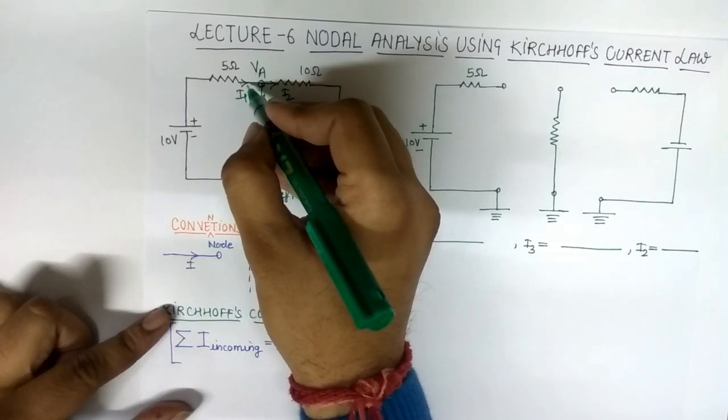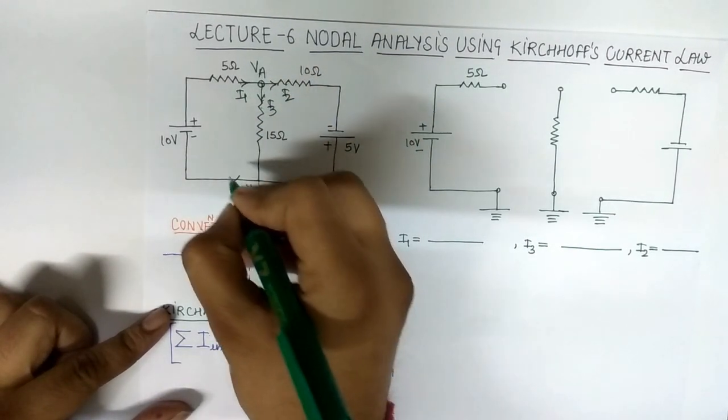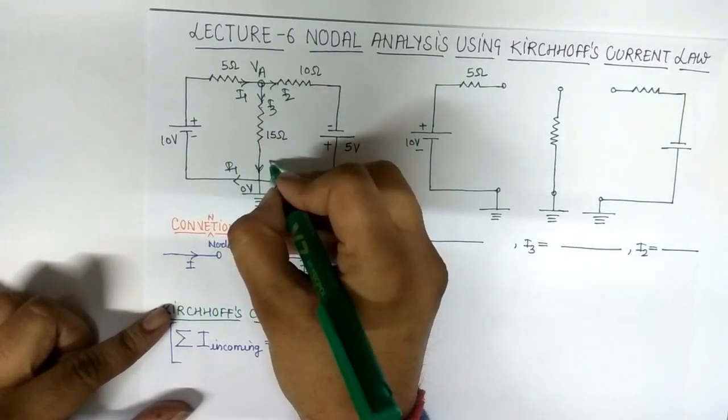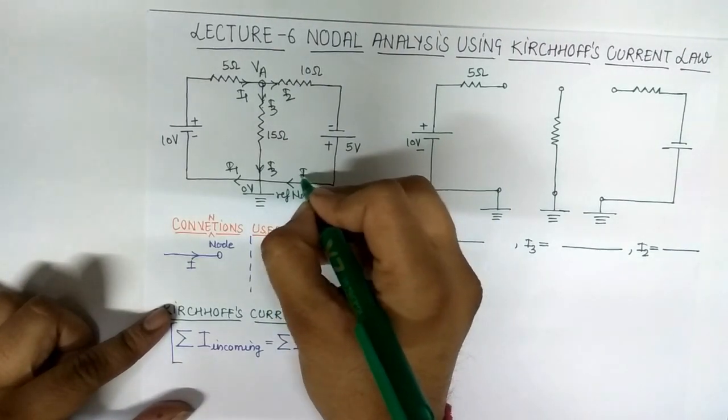When this I1 current is incoming to this node, it will be coming from this side, this is I1. Similarly, this is I3 and similarly this is I2.